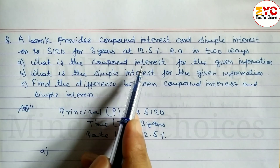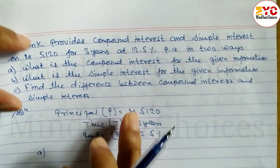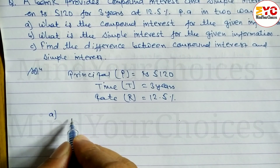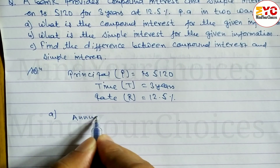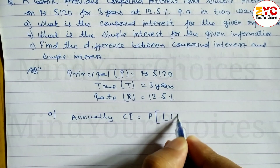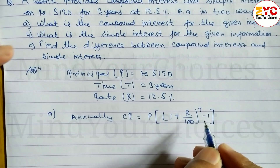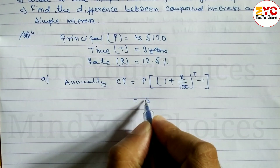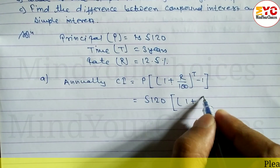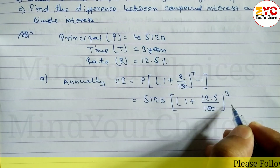Question number A: what is the compound interest for the given information? Compound interest is to be found annually. The formula is: CI = P × (1 + R/100)^T − 1. The value of P is 5,120. R is equal to 12.5%, so we write 12.5 divided by 100, and T becomes 3, minus 1.